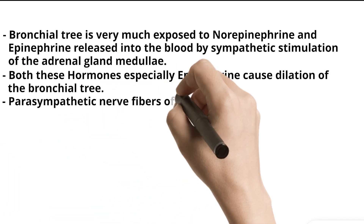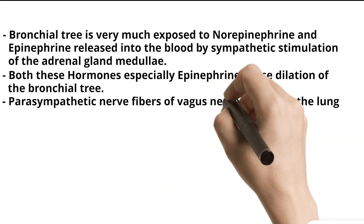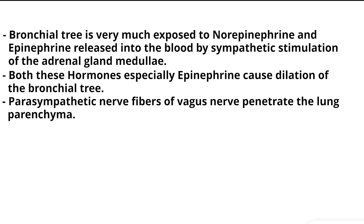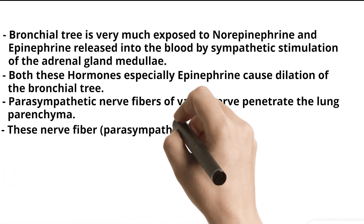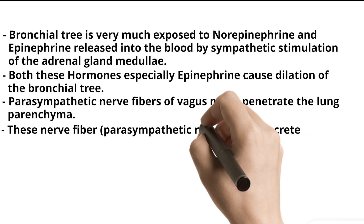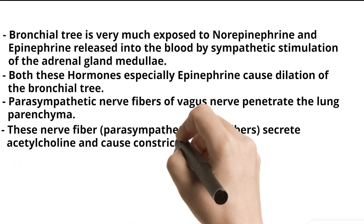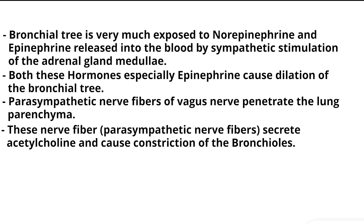Parasympathetic nerve fibers of the vagus nerve penetrate the lung parenchyma. These parasympathetic nerve fibers secrete acetylcholine and cause constriction of the bronchioles.